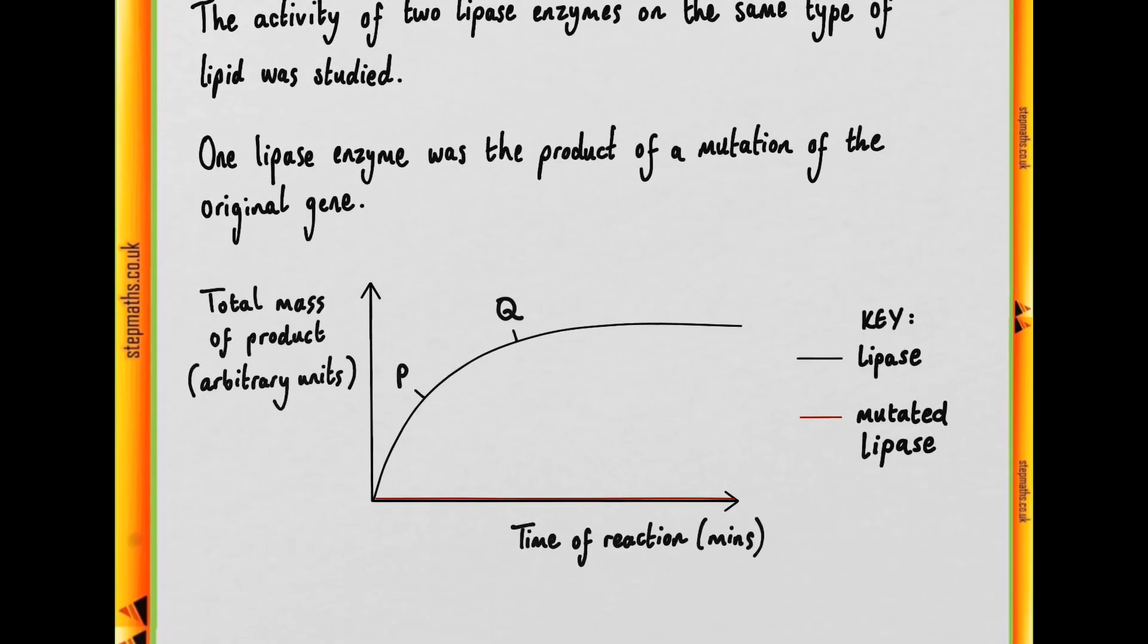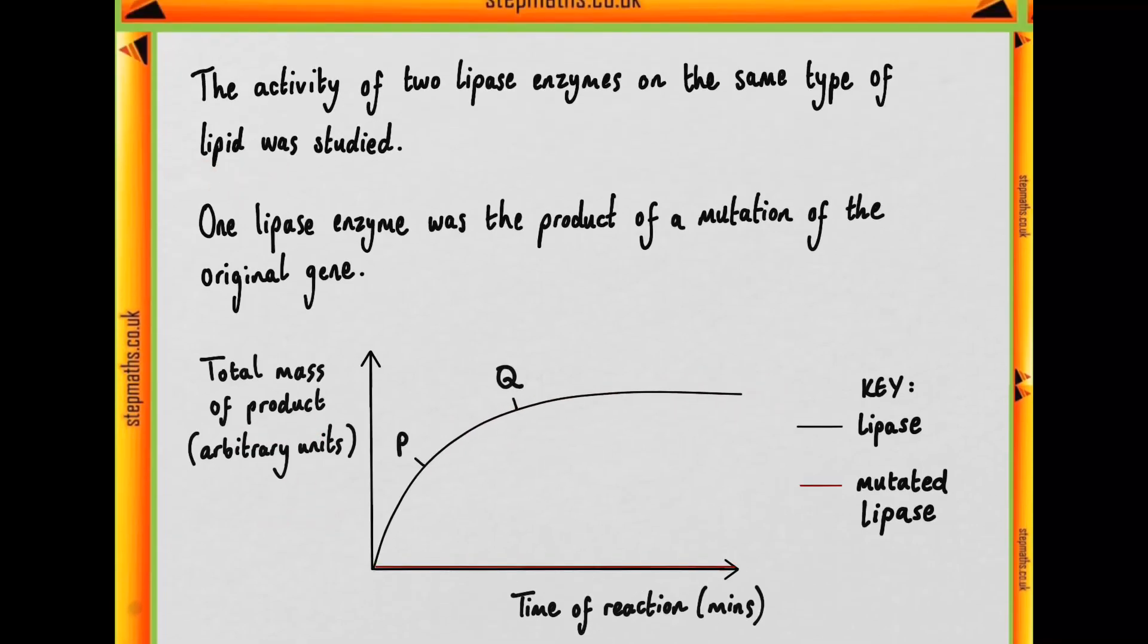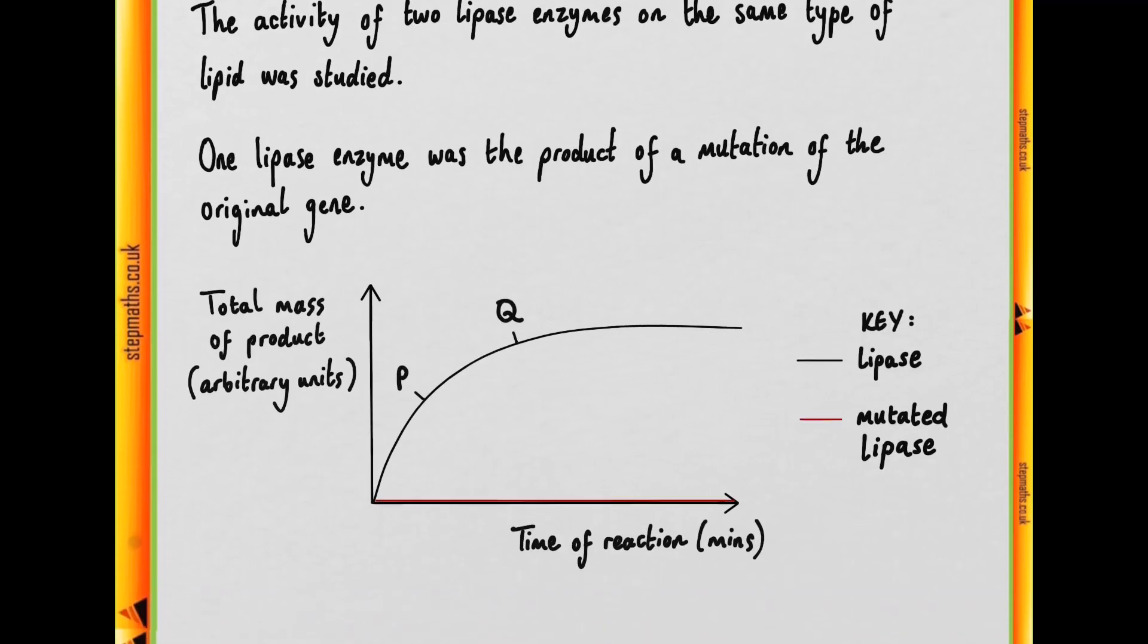Then we're given this graph which shows the results of the study. As you can see there appears to be an increase and then a plateau in the level of product. Since we're talking about a lipid here, that would be fatty acids and glycerol.